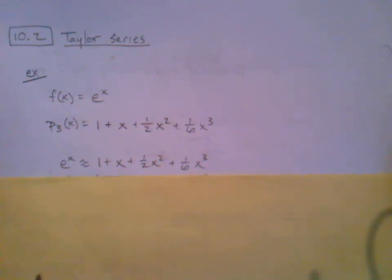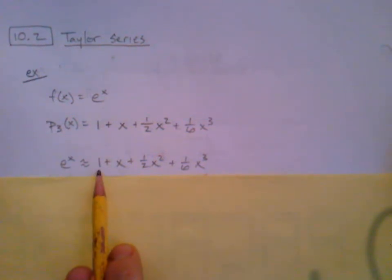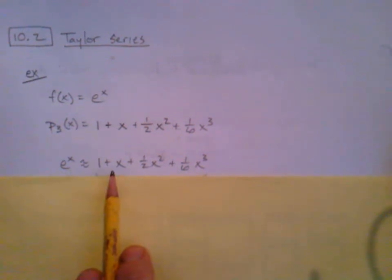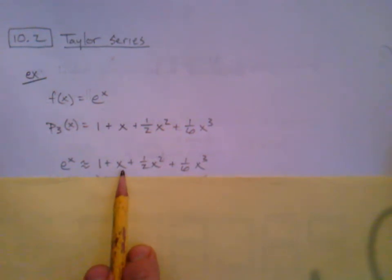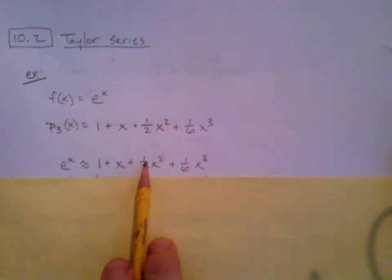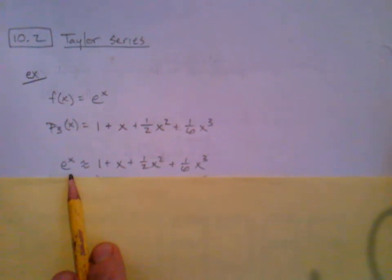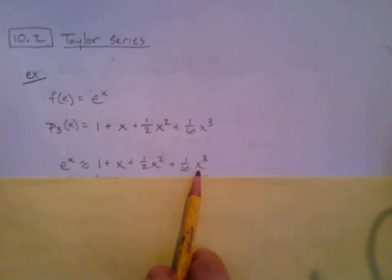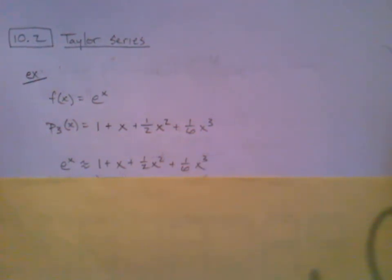If you recall from that section, the more terms there are, the more accurate the approximation becomes. Just having that first term — one — is not a very good approximation. Adding x is okay near zero but not very far from zero. Adding (1/2)x² gives a pretty decent approximation near zero. Then adding the fourth term (1/6)x³ models it quite well, but we don't need to stop there — we could keep going and add more and more terms.